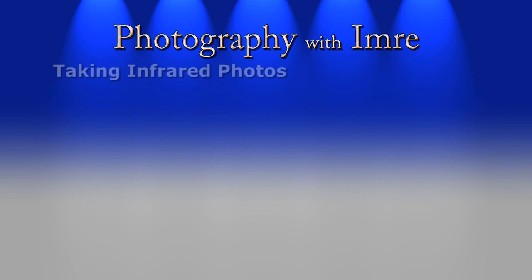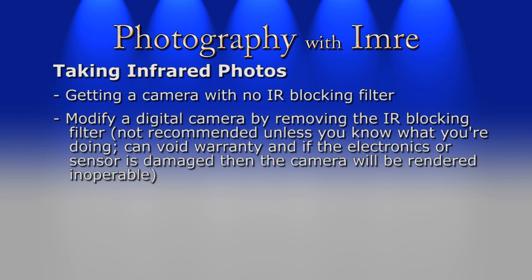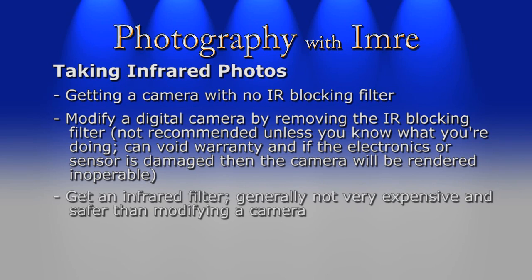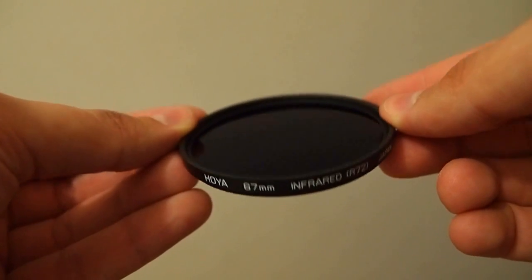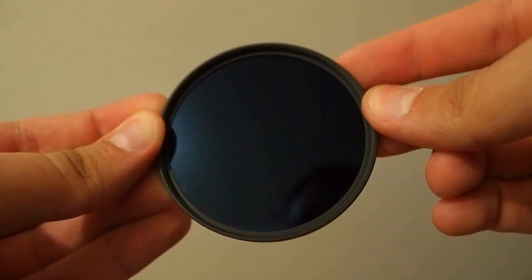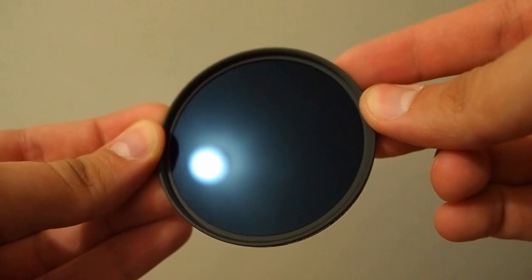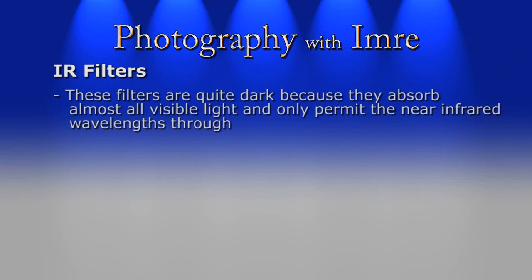So we know that our cameras can just barely see into this range, but how can we take real infrared photos? There are actually quite a few things you can do. Starting with purchasing a camera that has its infrared blocking filter removed. If you like voiding warranties and potentially damaging your equipment, you can follow instructions on some websites that guide you through removing the IR blocking filter. Or, lastly — probably the easiest and safest method, which I'll be using — is to use an infrared filter. In my case I'll be using this Hoya R72 infrared filter. You'll notice it's quite strange in appearance as it looks almost completely black — really it's a very deep red. The reason it's so dark is because the filter absorbs almost all visible light and only allows the near infrared wavelengths through.